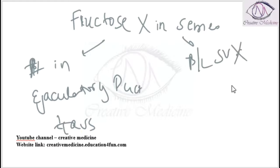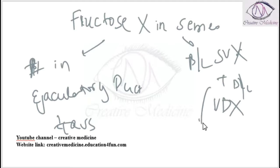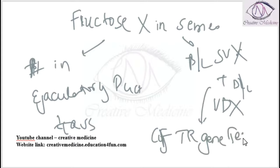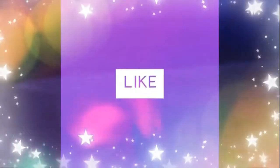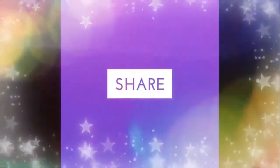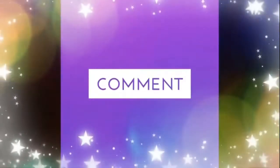In this case, you will have to do cystic fibrosis transmembrane regulator (CFTR) gene testing for cystic fibrosis, because bilateral absence of vas deferens and bilateral absence of seminal vesicles both indicate cystic fibrosis. Thank you for watching.